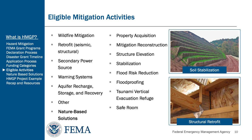Here we go over some examples of eligible mitigation activities. These can include property acquisition, mitigation reconstruction, structure elevation, stabilization, flood risk reduction, flood proofing, tsunami vertical evacuation refuge, safe rooms, wildfire mitigation, retrofits, secondary power sources, warning systems, aquifer recharge, storage and recovery, or other projects. FEMA may provide assistance for other innovative solutions not specifically outlined in this list. All activities will be evaluated on their own merit against program requirements, including eligibility and completeness, cost effectiveness, technical feasibility and effectiveness, and HMGP program compliance.